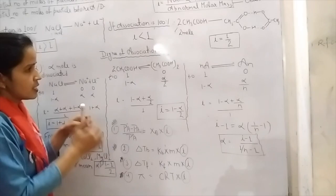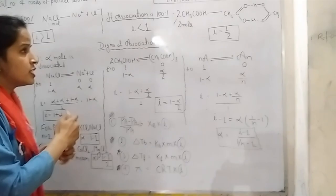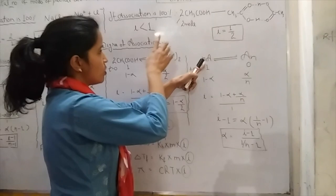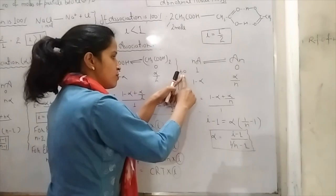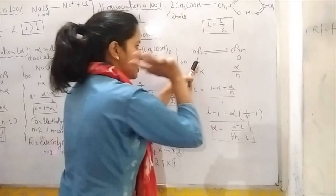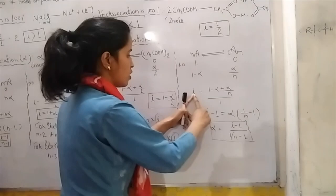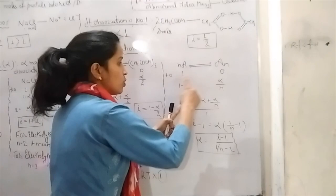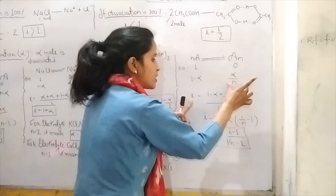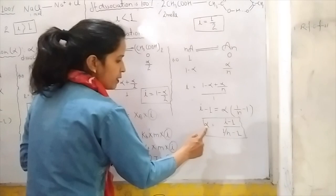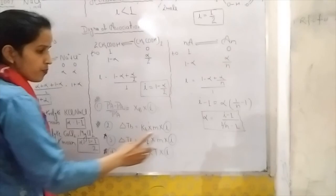Now the case of degree of association — when association is not 100%. We take nA giving (A)ₙ. At time T=0, one mole is taken and association has not started. When association starts, alpha moles associate and form α/N of the associated product. So i = (1 − α + α/N) / 1. Solving this gives: α = (i − 1) / (1/N − 1), which is the relationship between alpha and 'i' in the case of association.